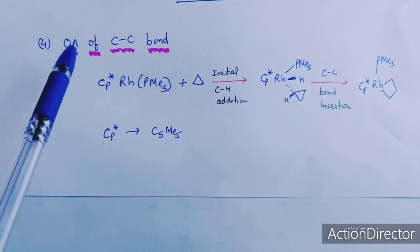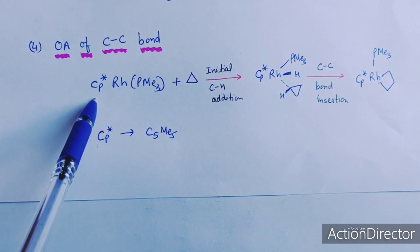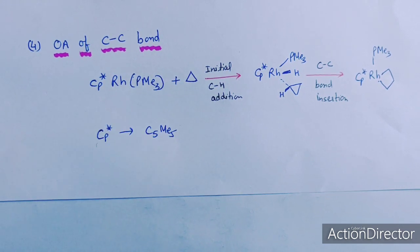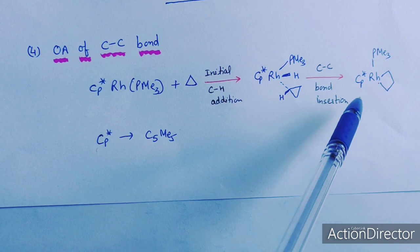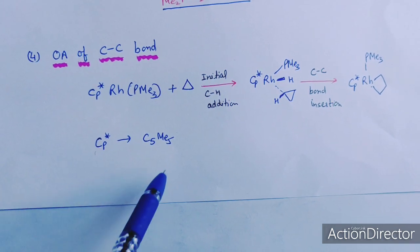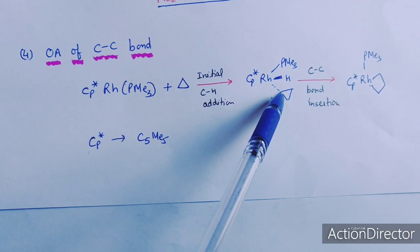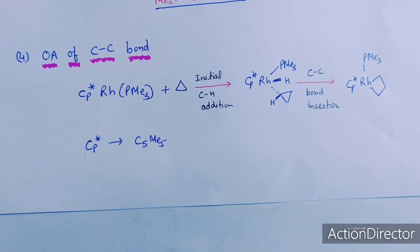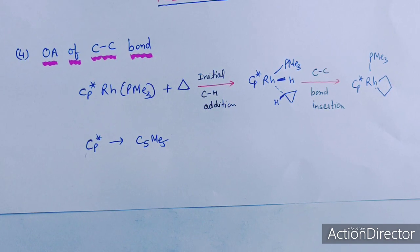This is the example of oxidative addition of a CC bond. CP* refers to the cyclopentadienyl ligand C5Me5. With cyclopropane, the initial step is CH addition forming an intermediate product, and then finally CC bond insertion takes place to give the final product. So this is an oxidative addition reaction of the CC bond — first CH bond addition, then the ring opens and CC bond activation and oxidative addition take place.